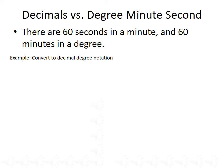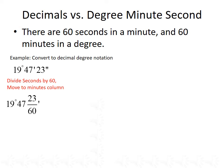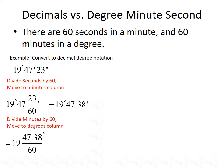Let's convert to decimal degree notation. We're given an angle that measures 19 degrees, 47 minutes, and 23 seconds — the single apostrophe denotes minutes and the double apostrophe denotes seconds. First, divide the number of seconds by 60 and move that decimal to the minutes column: 23 divided by 60 gives 0.38, so we now have 19 degrees and 47.38 minutes. Next, divide the minutes by 60 and move that to the degrees column: 47.38 divided by 60 gives 0.79, so we have 19.79 degrees.